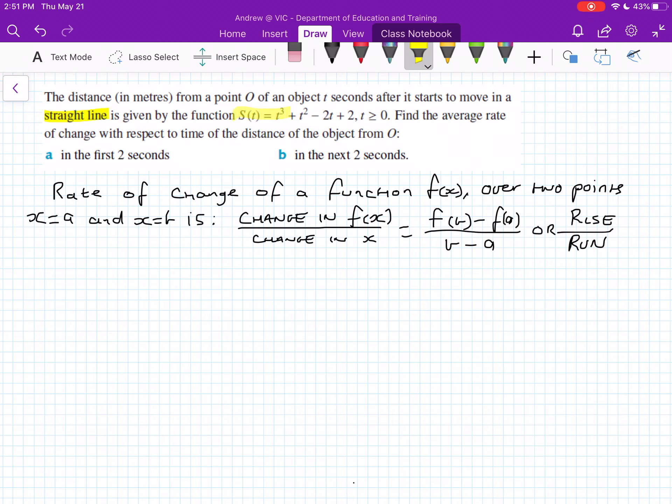It's given by the function s(t) equals t cubed plus t squared minus 2t plus 2, when t is greater than or equal to 0. You'll notice t has got to be greater than or equal to 0 because we're talking about time here, you can't really have a negative time.